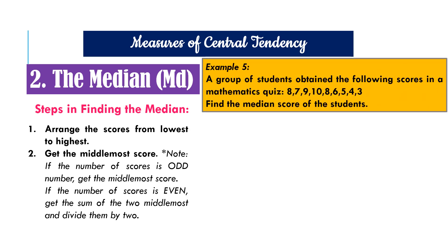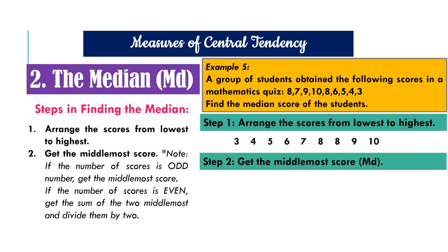Here is another example. Students obtain the following scores in a mathematics quiz. Find the median score of the students. Again, we have to arrange the scores from lowest to highest. When we do that, the result is this. So the lowest score is three followed by four, five, six, seven, eight, eight, nine, and ten. Step two, we get the middlemost score. The middlemost score is seven, which makes the median seven. So seven is the median score of the students in example number five.